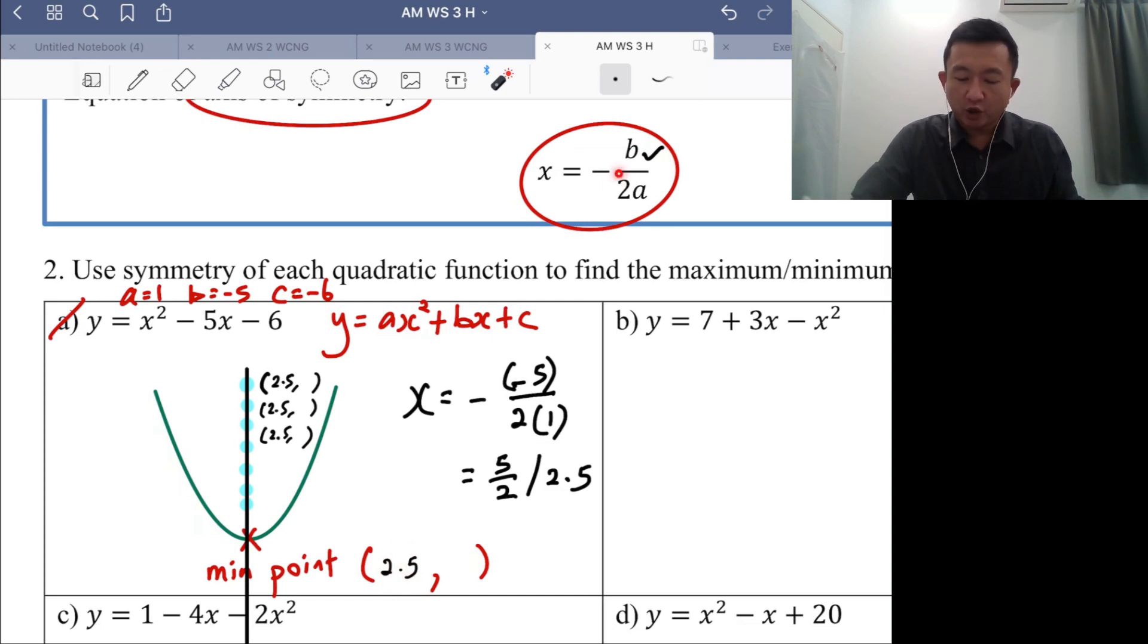That's the conclusion. You can use negative b over 2a as the x value of your turning point. It must be the same.